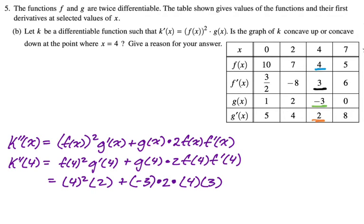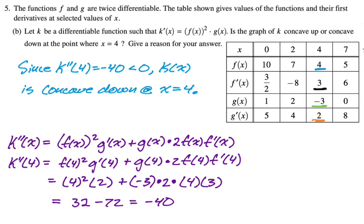So this, we get 16 times 2, you actually do need to simplify this a little bit to figure out if it's positive or negative. So let's do that. 16 times 2 is 32. And then we get 12 times 2 is 24 times 3 is 72. So 32 minus 72 is -40. Now we need to make our conclusion because the question is, is k concave up or down? Well, we just found k''(4) < 0, so concave down. So I will write that down. Since k''(4) = -40, which is less than zero, k is concave down at x = 4. That's our answer.